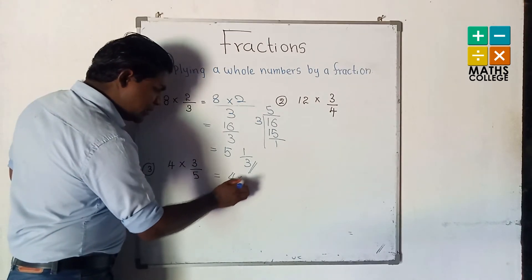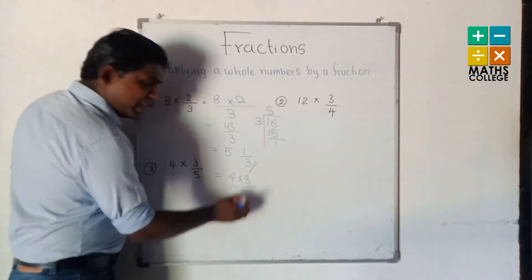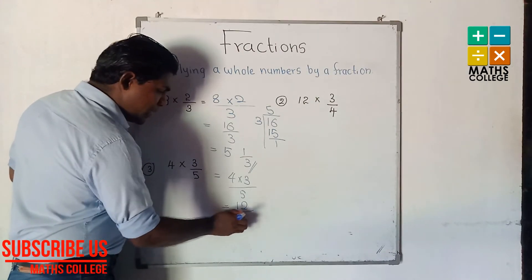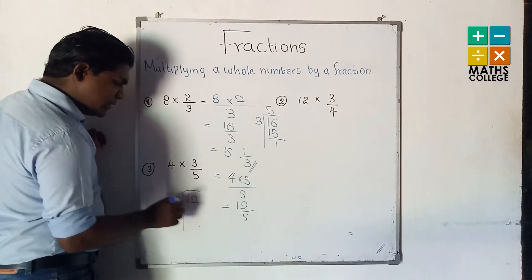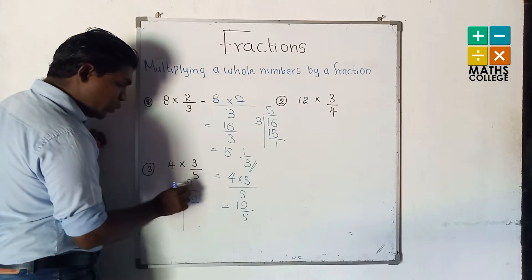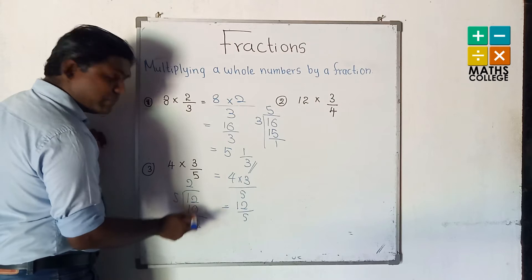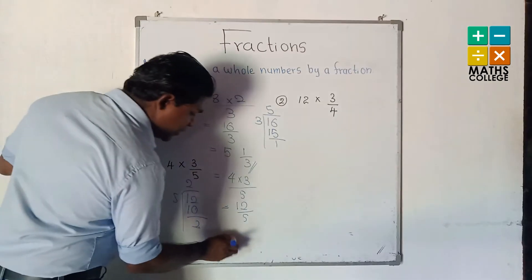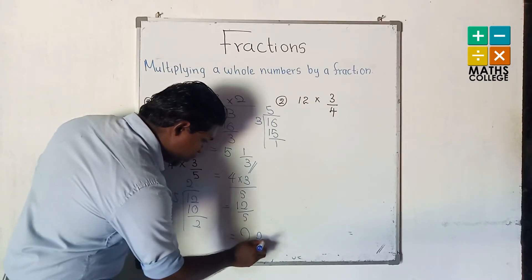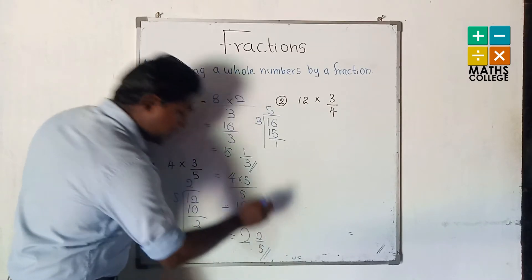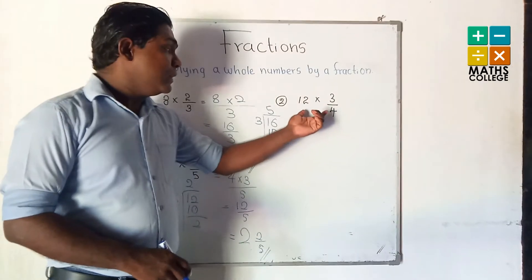Multiply the numerators: 4 multiplied by 3 is 12 upon 5. Again we have an improper fraction. 12 divided by 5: 2 times. 2 multiplied by 5 is 10. 12 minus 10 is 2 remainder. So we can write the answer as 2 and 2 upon 5.